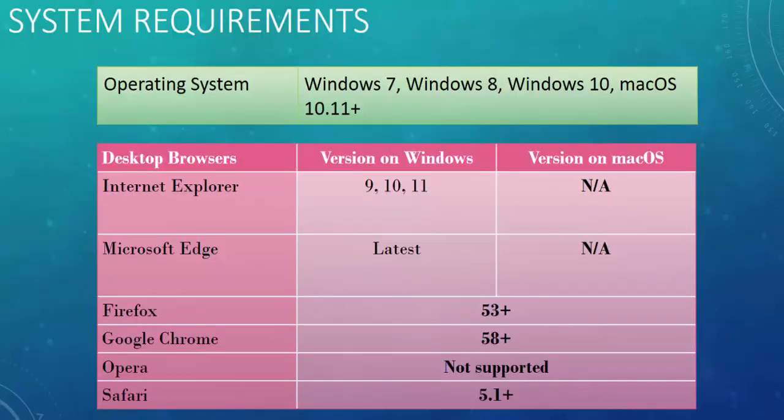We will see the system requirements to install Catlan. Catlan Studio works on both Windows and Mac OS. If you are going to perform web UI testing, then no additional settings are required — you just need the required browser to be installed. Catlan supports Internet Explorer, Edge, Chrome, Firefox and Safari. Opera browser is not supported. You can see the version supported here.